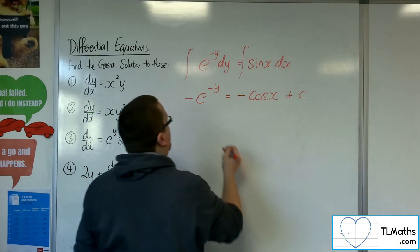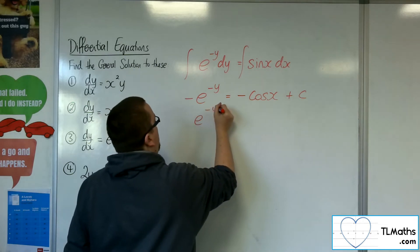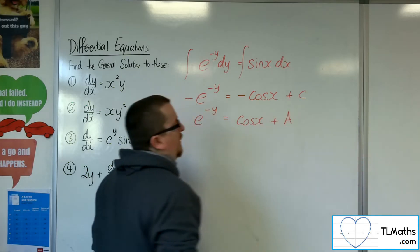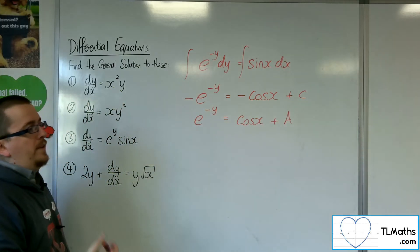So if I multiply through by minus 1, I'm going to get e to the minus y is equal to cosine of x plus another constant, a, rather than having a minus c.